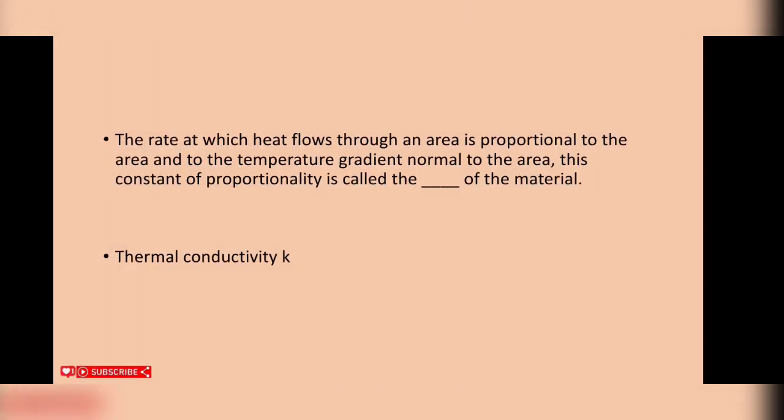Next question: The rate at which heat flows through an area is proportional to the area and to the temperature gradient normal to the area. This constant of proportionality is called thermal conductivity k of the material.